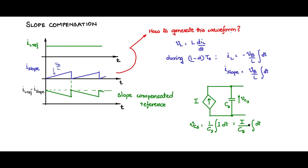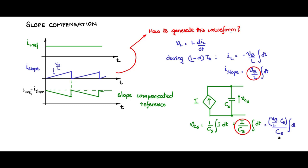Observe and compare the two expressions: vb/L from the i_slope equation and i/Cs from the capacitor voltage. Comparing these two, we can write i = (vb/L) · Cs. So the voltage across the capacitance equals (vb · Cs/L) divided by Cs, times integral(dt), giving a slope of vb/L.